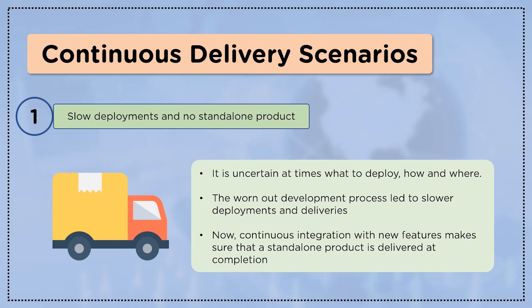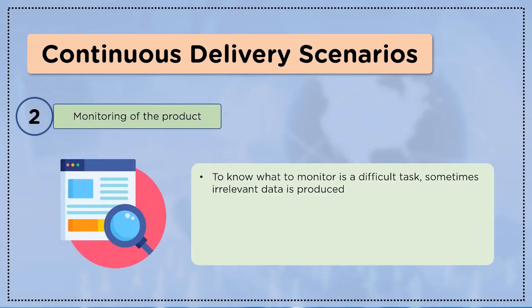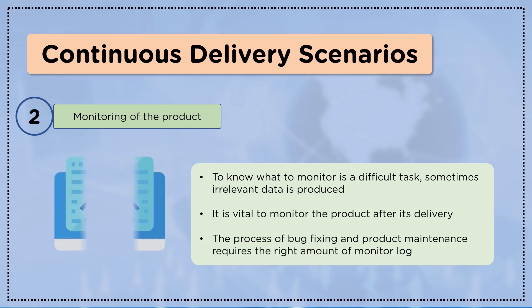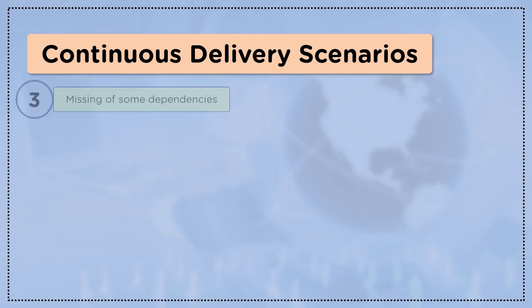Continuous integration with new features ensures that a standalone product is delivered at completion. The second scenario is monitoring of the product. The challenge is knowing what to monitor. Sometimes irrelevant data is produced, and at other times the amount of monitoring messages may be so great that a developer finds it difficult to analyze them, or they might be too few to figure out the bugs. Knowing how much to monitor can be a challenge in itself.